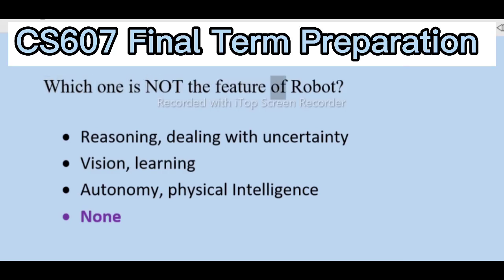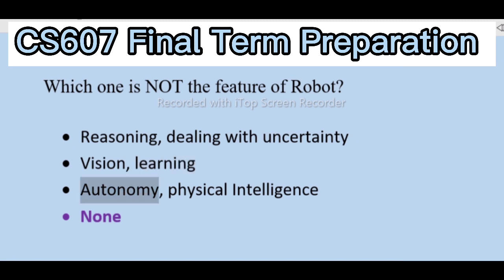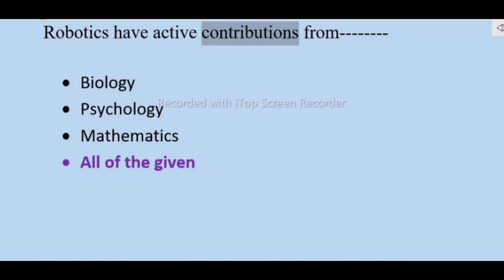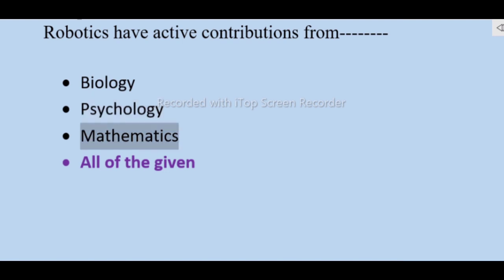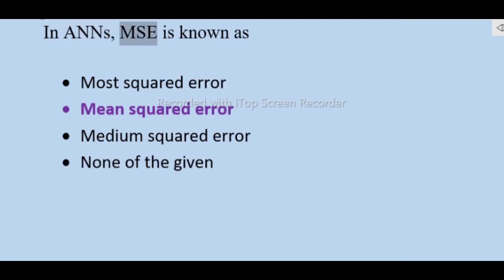Which one is not a feature of robot reasoning? Dealing with uncertainty, vision, learning, autonomy, physical intelligence — none. Robotics have active contributions from biology, psychology, mathematics — all of the given. In arms, MSC is known as: most squared error, mean squared error, medium squared error, none of the given.